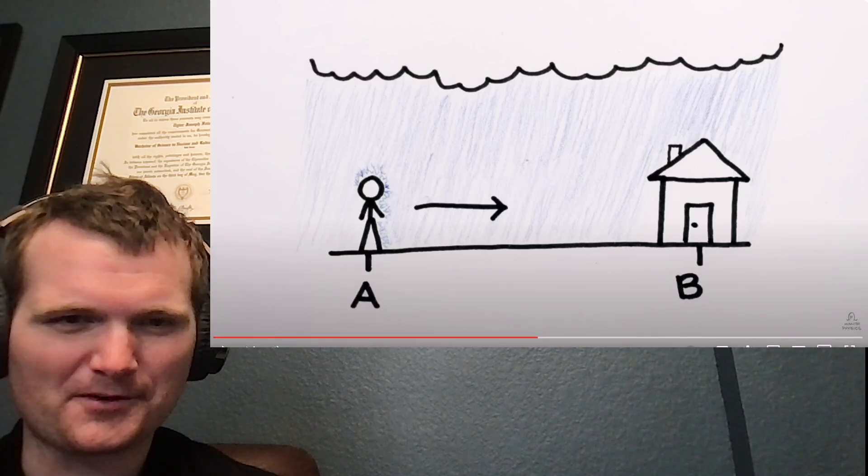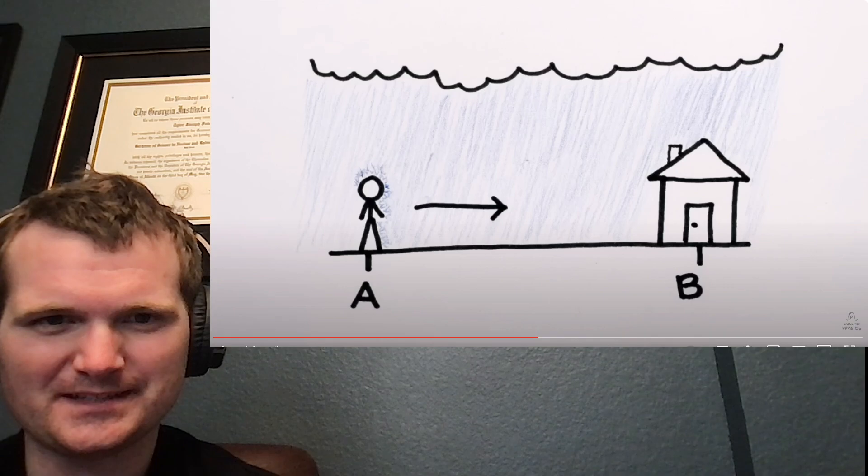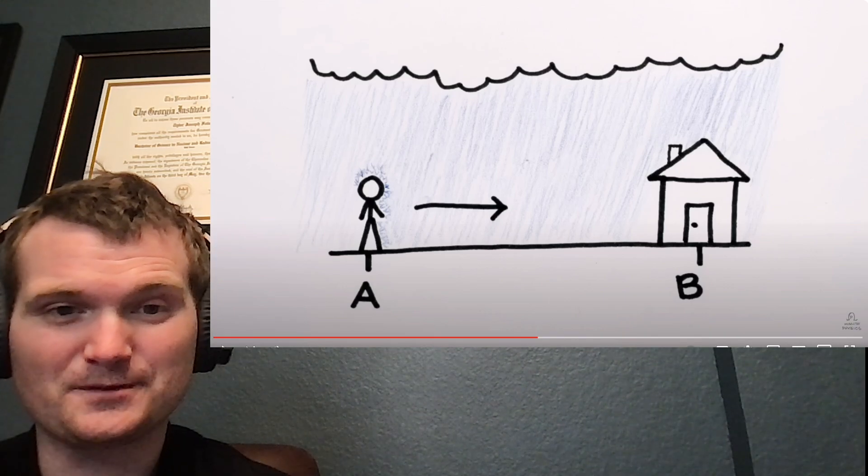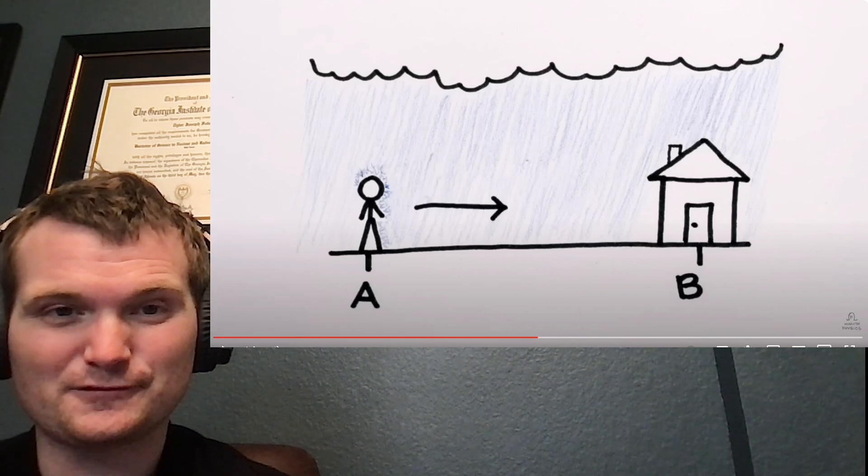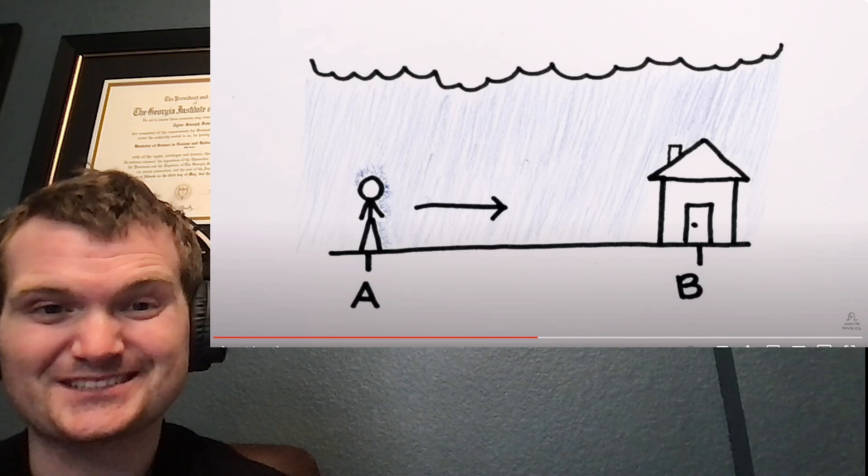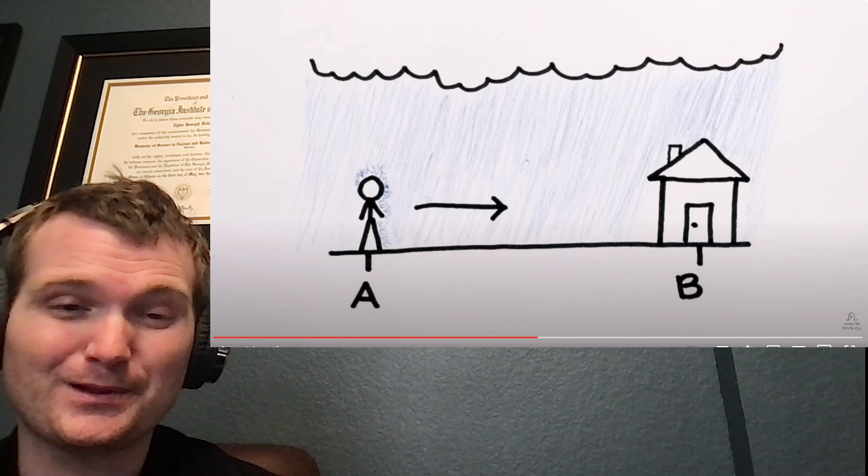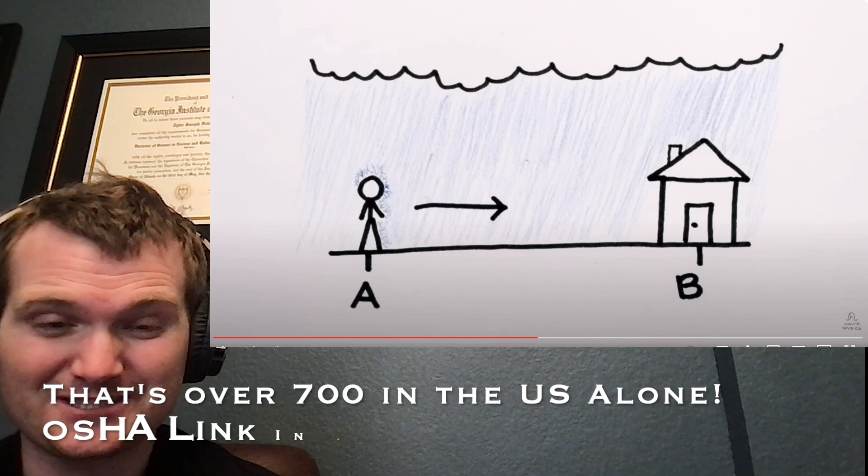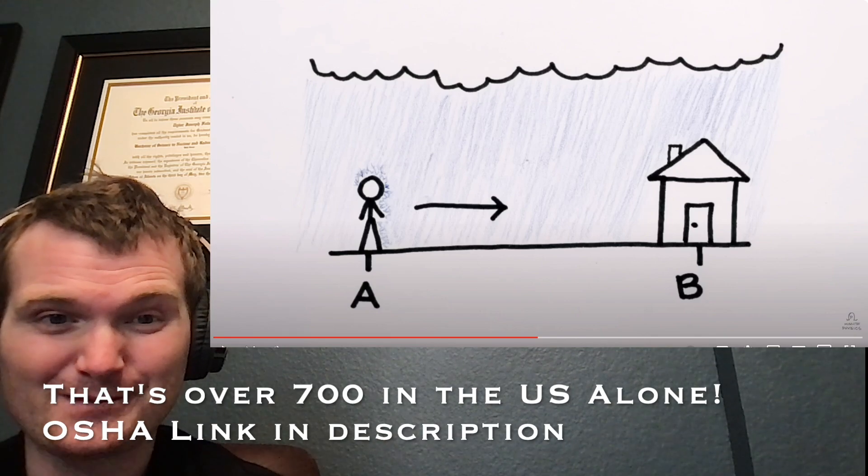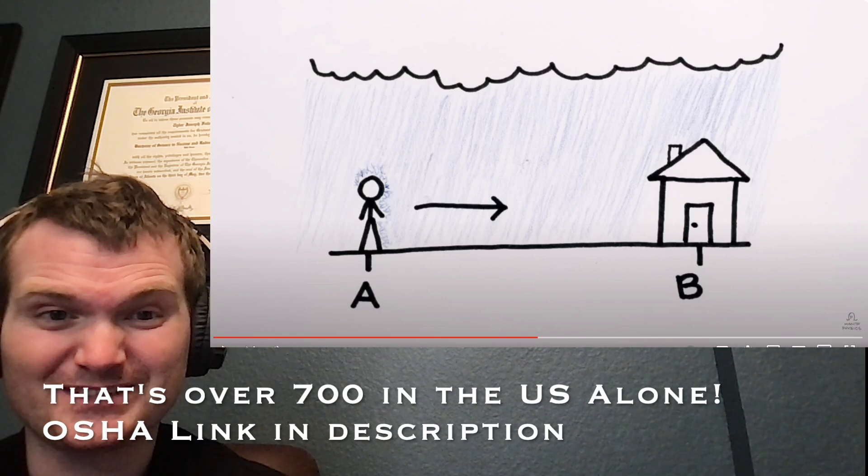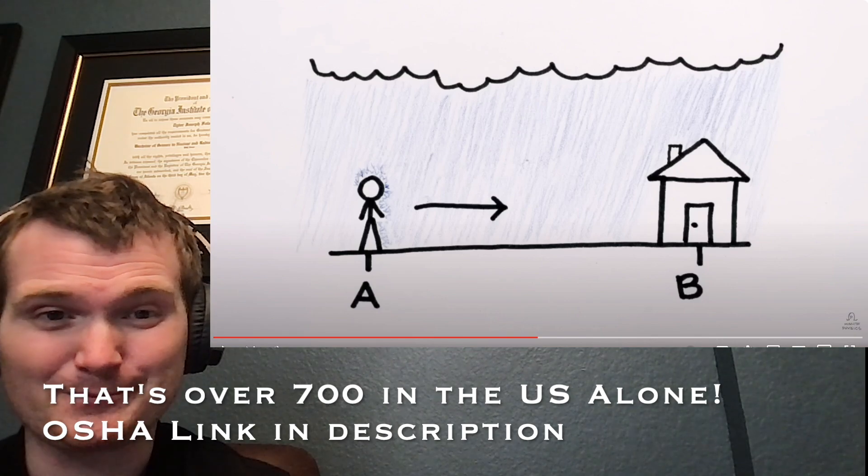One thing I still want to point out, I know they're strictly talking about wetness, but slips, trips, and falls account for about 15% of all workplace deaths according to OSHA. And they're among the most common sorts of injuries that you would have at a nuclear power plant.